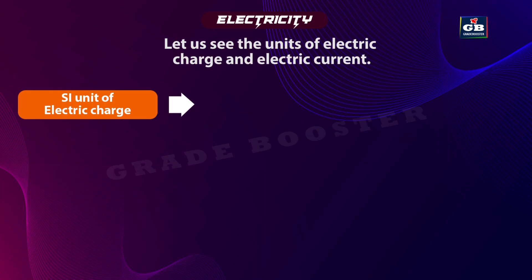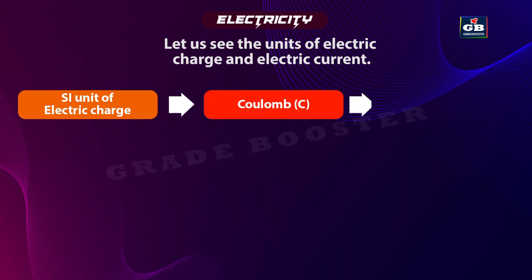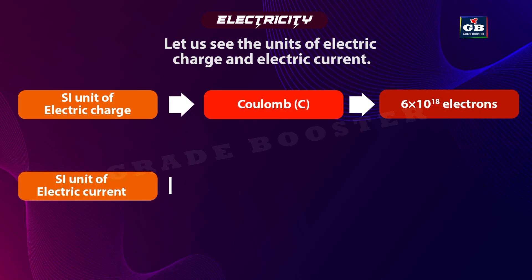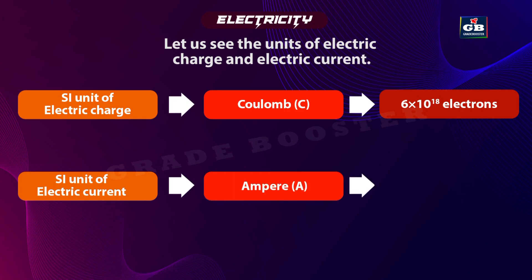The unit of electric charge is the coulomb (C). One coulomb is roughly equal to the charge of 6 × 10^18 electrons, with each electron carrying a charge of 1.6 × 10^-19 coulombs. The SI unit of electric current is the ampere (A).